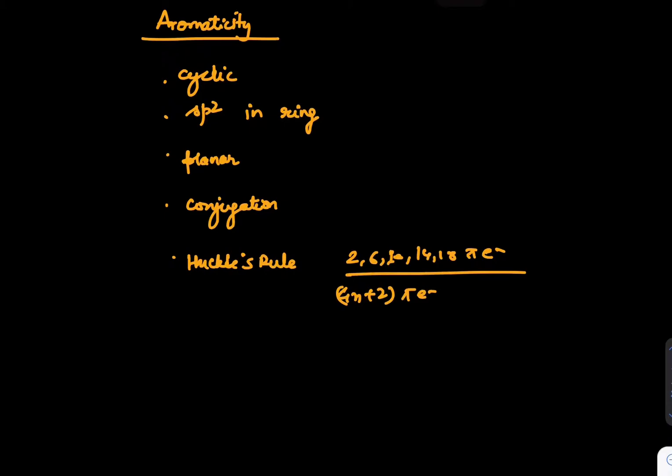Now we apply these things to Azulene and check whether this will show aromaticity or not. Azulene has this kind of structure of 7 member and 5 member rings. Now if Azulene is drawn in this format where there is a negative charge here and double bonds with a plus charge here and double bond like this,